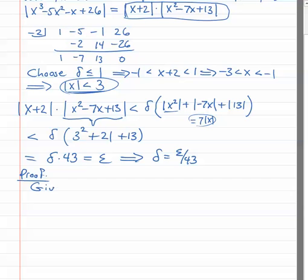We'd like to match that up with our epsilon, so we can choose delta to be epsilon over 43. For the proof: given epsilon greater than 0, choose delta to equal the minimum of 1 and epsilon over 43.